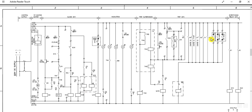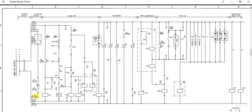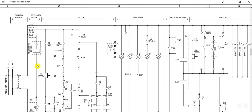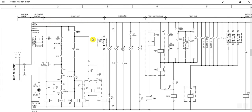This is the control circuit. The control supply voltage is 220V DC. This side is the positive bus and this side is the negative bus. This is the spring charging motor circuit — here is the spring charging motor. This is the closing circuit — the circuit breaker closing circuit.